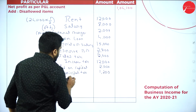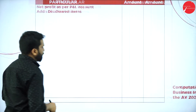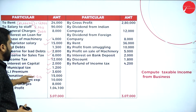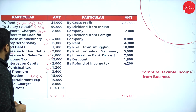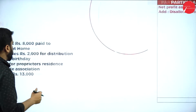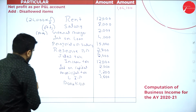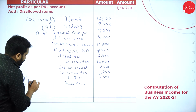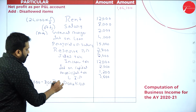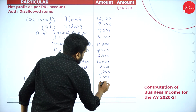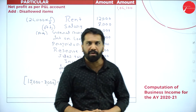LIP (Life Insurance Premium): ₹3,600. Donation: out of ₹15,000, ₹8,000 is for trade association, so balance ₹7,000 is personal — take ₹7,000. These are all your disallowed expenses.